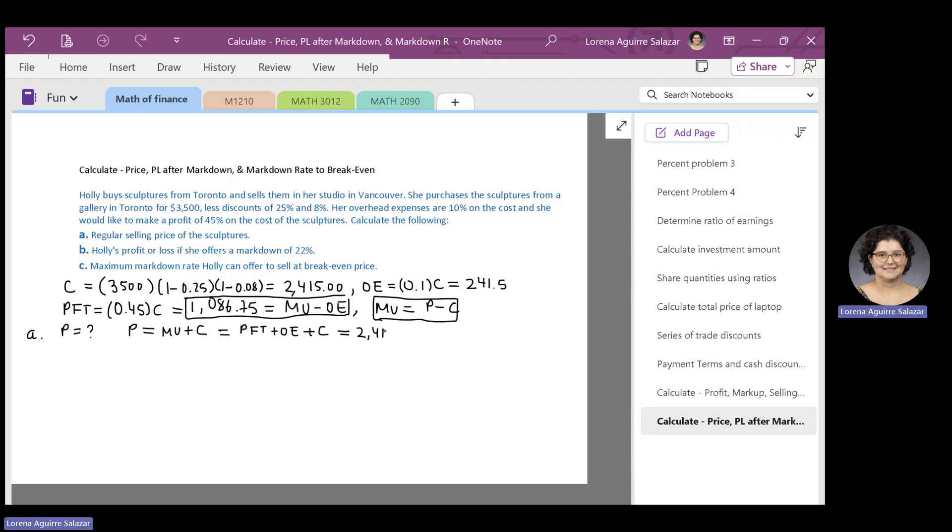We add 2,415, 241.5, and 1,086.75. The addition of those numbers gives us the price at which sculptures are sold. And that price turns out to be $3,743 with 25 cents.